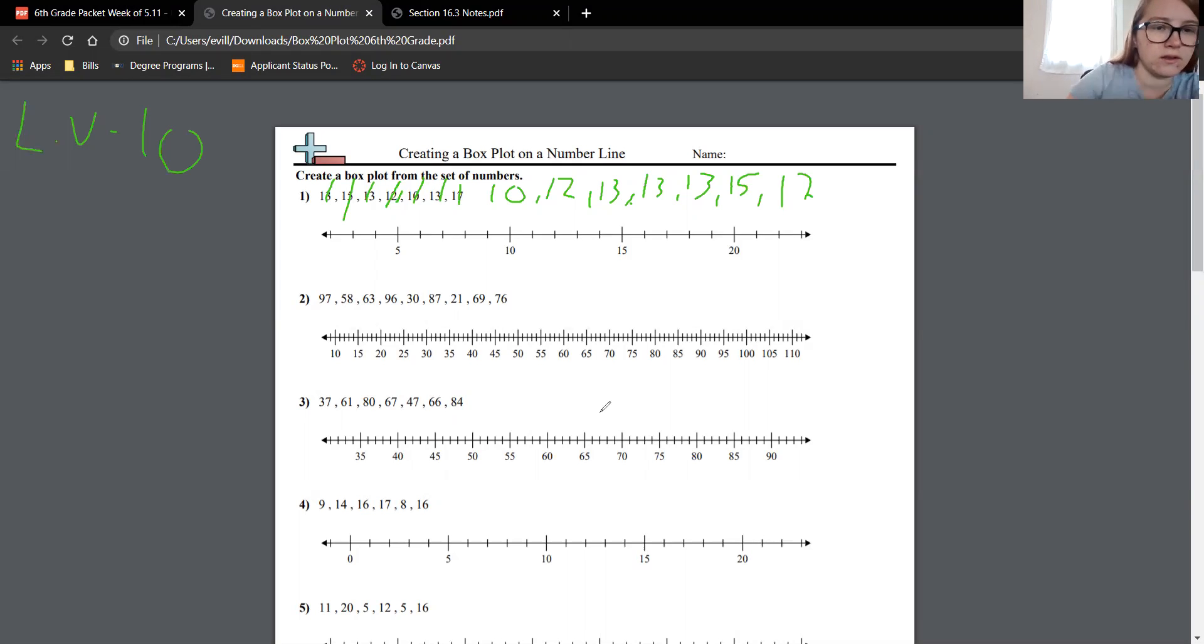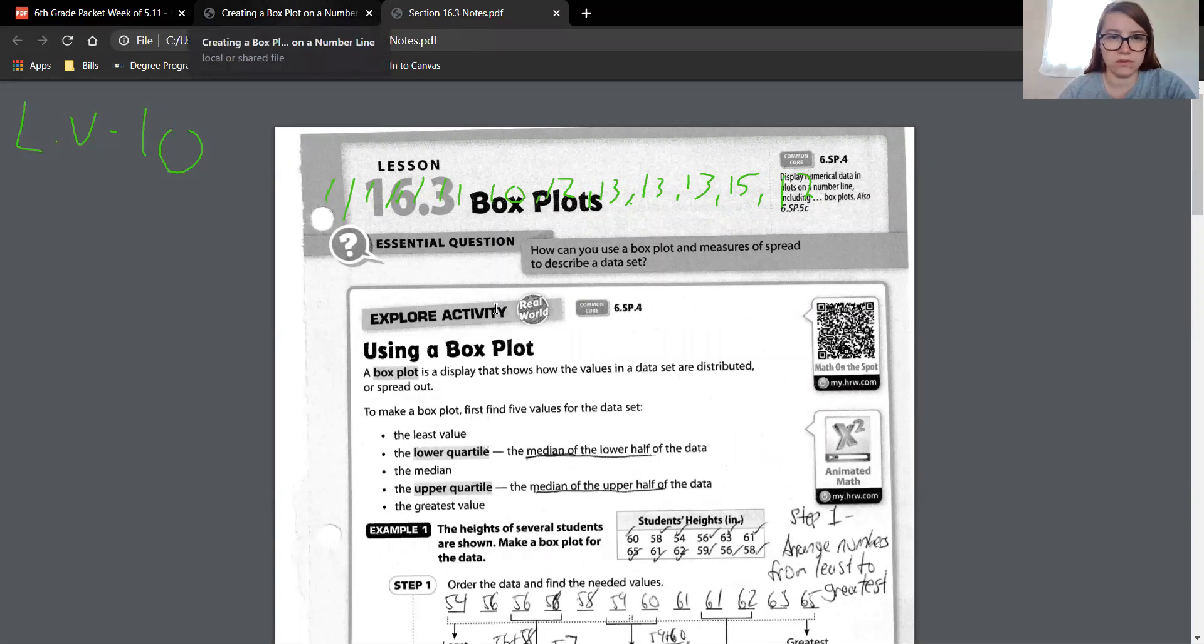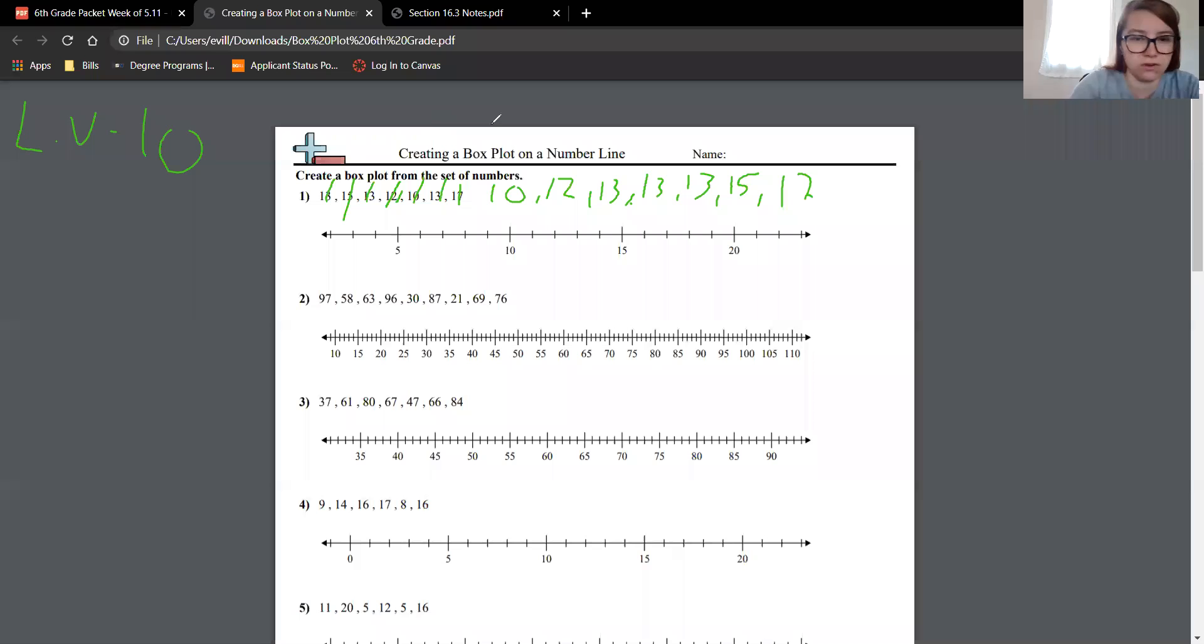So our least value is 10. Great. What else do we need to do? The lower quartile, so the median of the lower half of the data. Let's find our median first. We'll leave that part blank for now. So lower quartile, median, upper quartile, and greatest value. So our greatest value in this is 17. To find our median, we have to find the middle number in our data. So let's find that one, one, two, two, three, three. Awesome. That worked. Our middle number is 13. So this is an odd set of numbers. We don't have to do any division. So our median is 13.